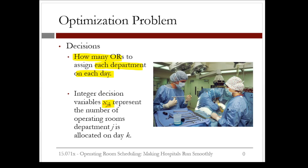X_j_k will represent the number of operating rooms department J is allocated on day K. Here, J can take values such as ophthalmology, gynecology, general surgery, and so on, whereas K would take values like Monday, Tuesday, Wednesday, and so on.